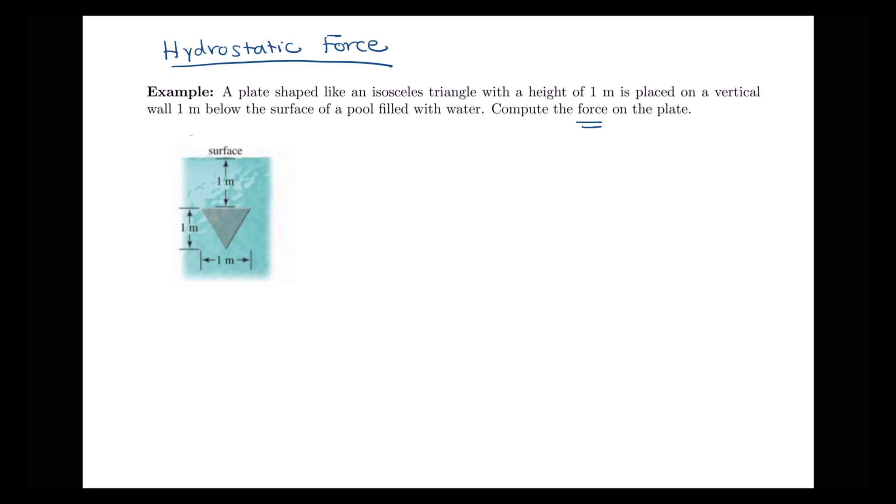So the first thing that we need to do when we're given one of these problems is introduce coordinate axes here. We're going to let y equals 0 represent the bottom of my plate. Since this plate has a height of 1, I'll have y equals 1 here. The top of the surface of water, since that's 1 meter above the top of my plate, will be at y equals 2. So we have this vertical axis here going from 0 to 2, with 0 as the tip of the plate and then 2 as the surface of the water.